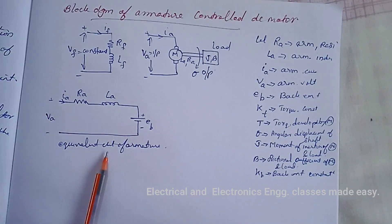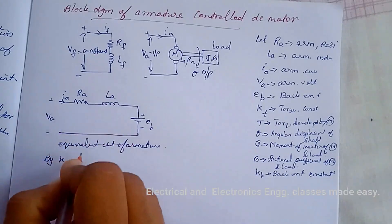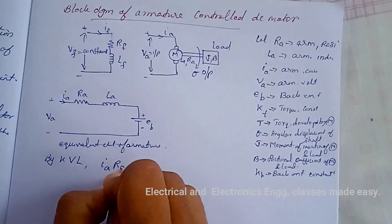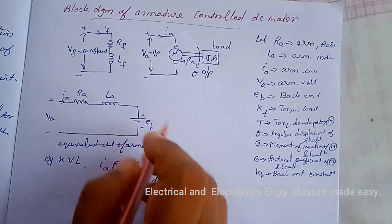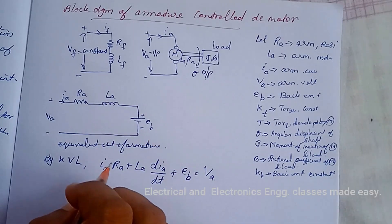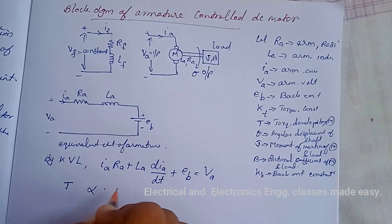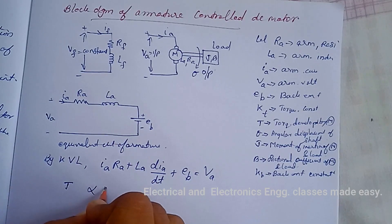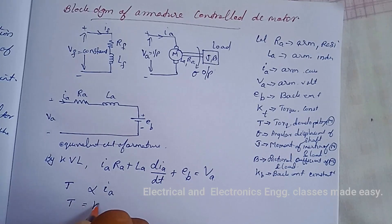This is the equivalent circuit of the armature. By Kirchhoff's voltage law, we can write: I_A·R_A + L_A·(dI_A/dt) + E_B = V_A. The torque of a DC motor is proportional to flux and current. Since the flux is constant here, we can write torque is proportional to I_A, the armature current.